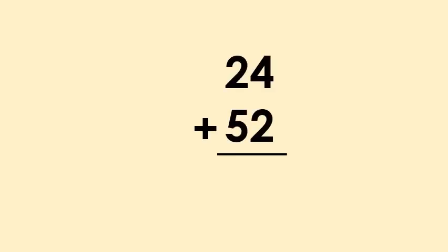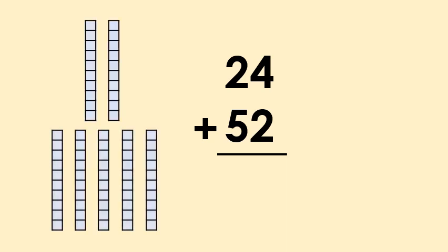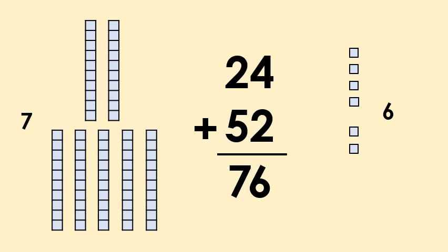Sometimes you might see a sum written this way round, from top to bottom. This actually makes it a bit easier to add the tens column and the ones column together. Let's try this sum. First, add the tens together — that's two plus five, which gives us seven. Now let's add the ones together — four plus two gives us six. So there are seven tens and six ones, which is seventy-six.